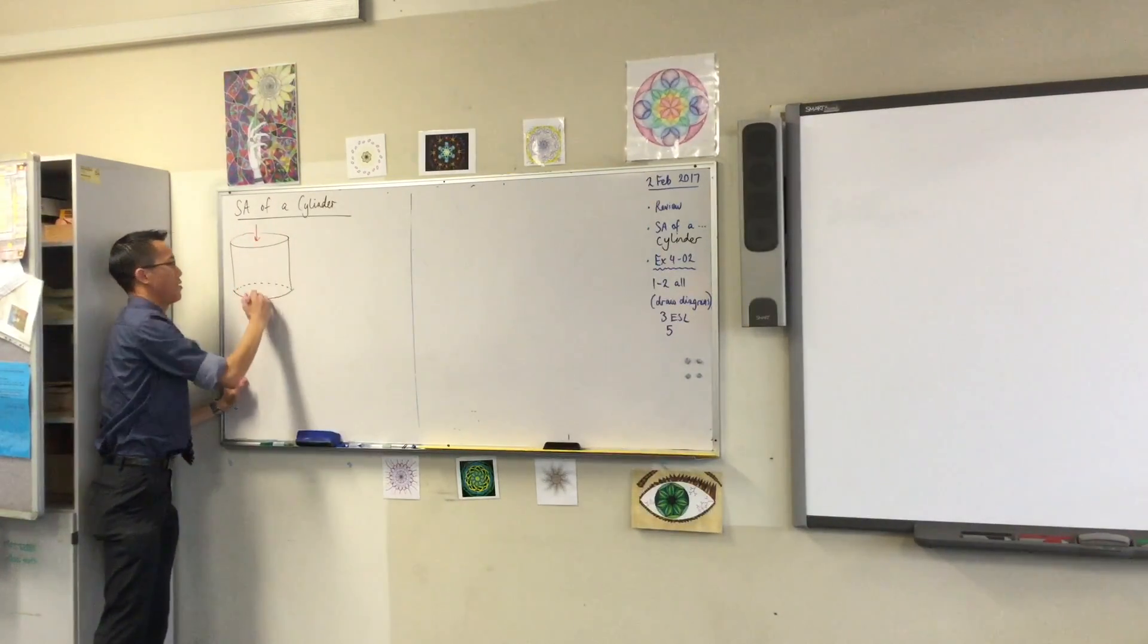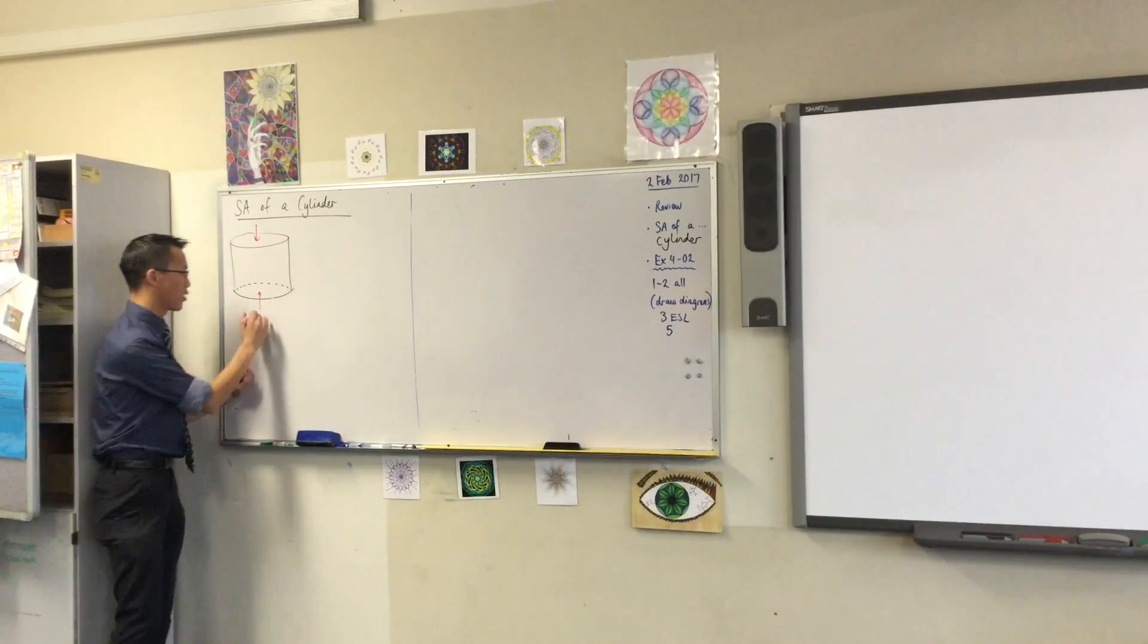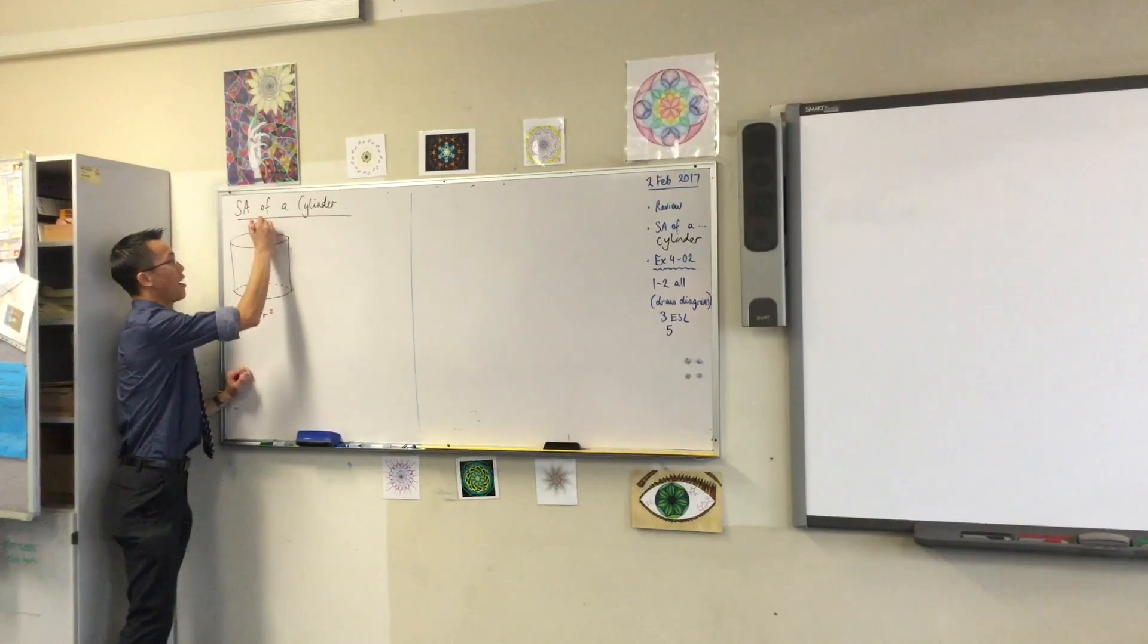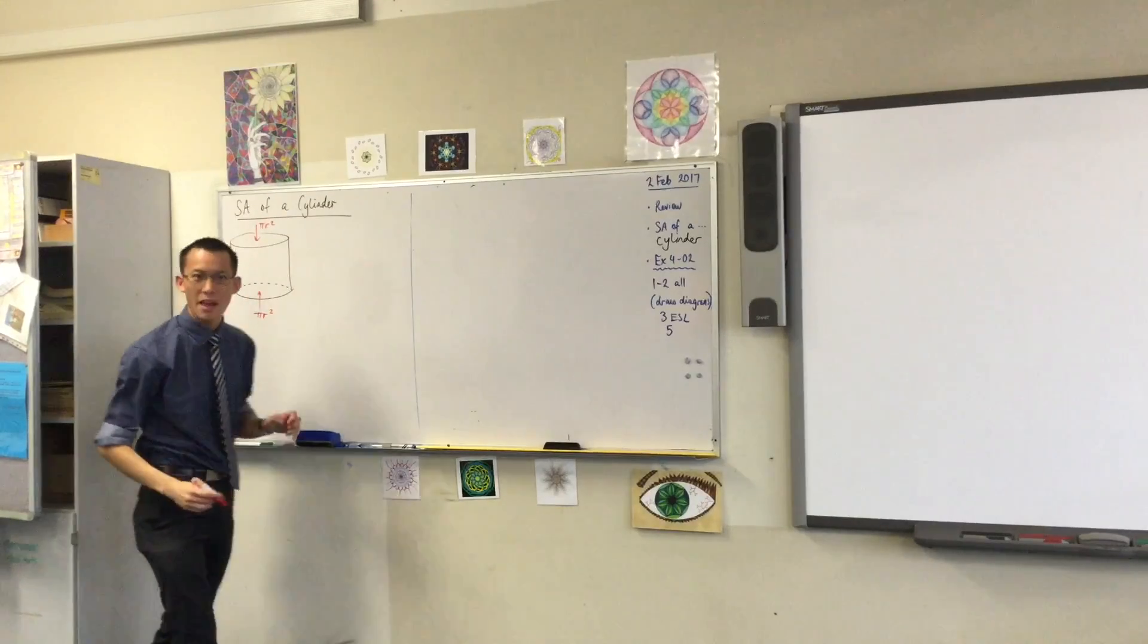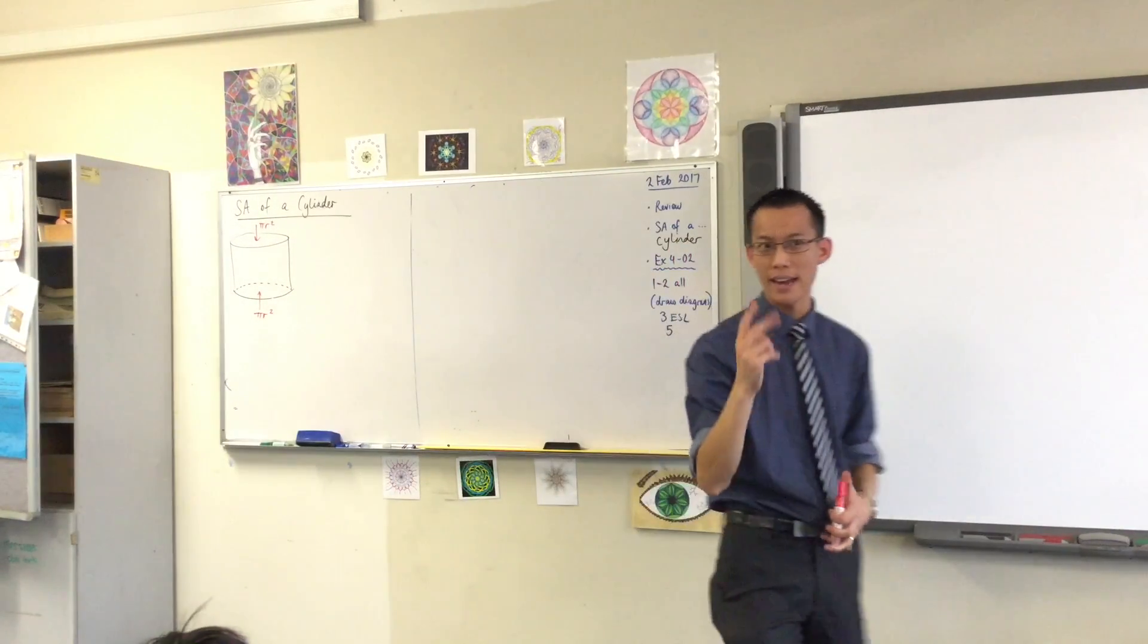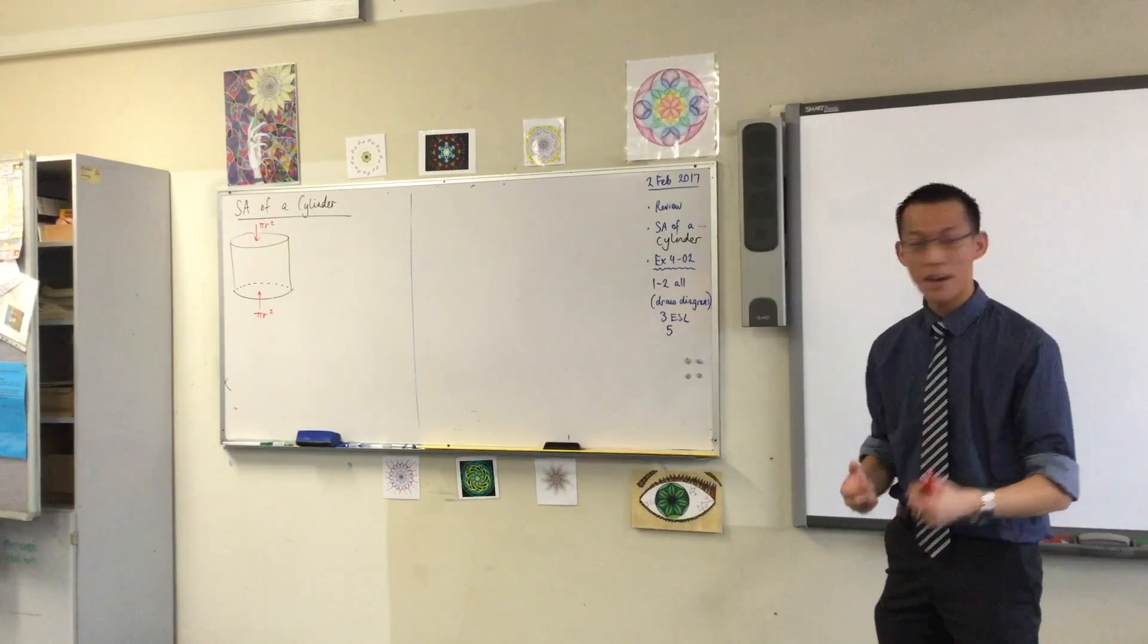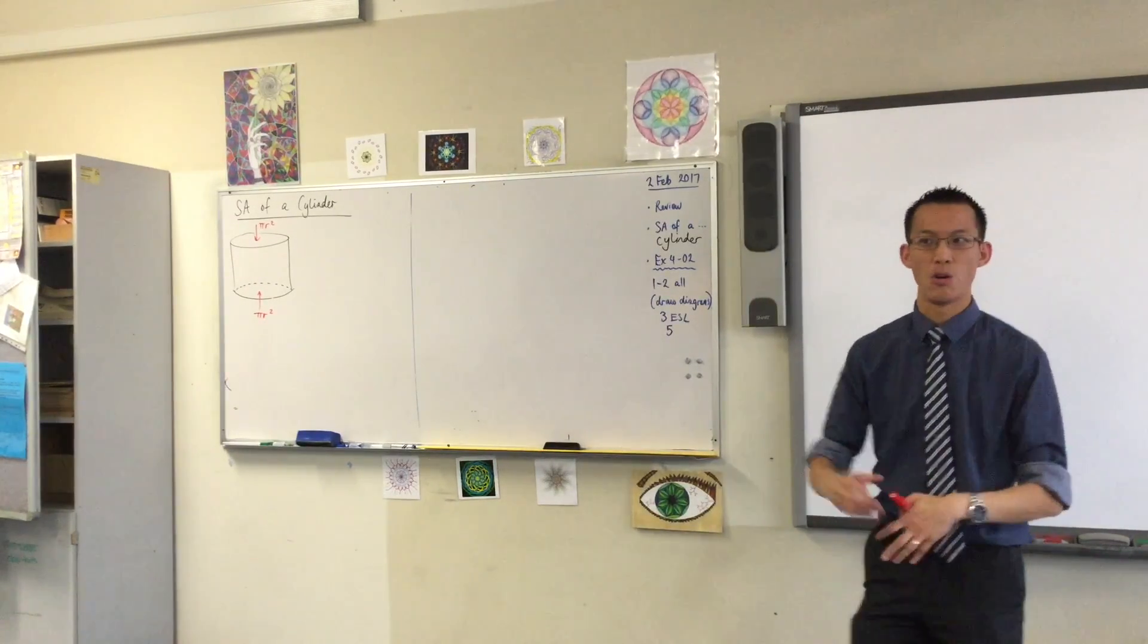So I've got the top and the bottom right and we know the area of a circle. Each one of those is going to be πr². We've done that before. So π r² is the area of circle. You got two of them. Now someone else, can someone else pick up and tell me what then do we need to add on to that to get the whole thing?